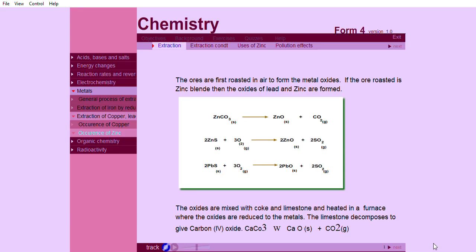The oxides are mixed with coke and limestone and heated in a furnace, where the oxides are reduced to the metals. The limestone decomposes to give carbon-4 oxide.